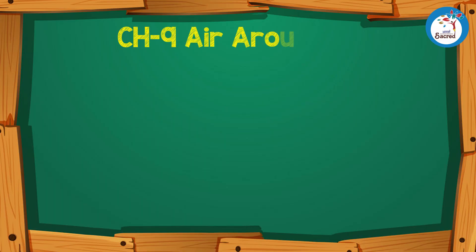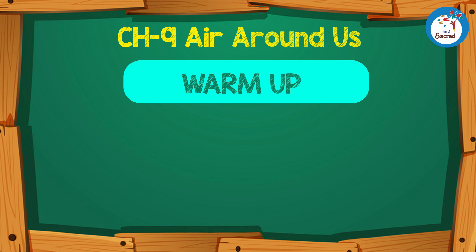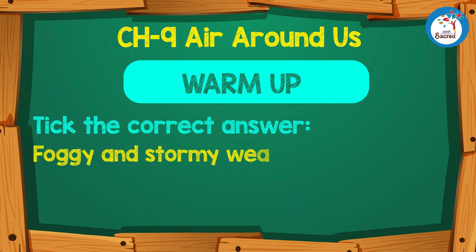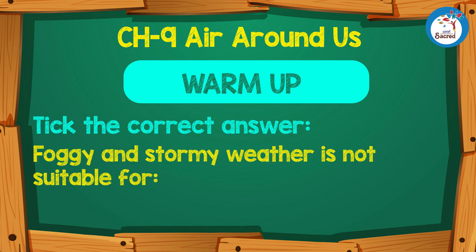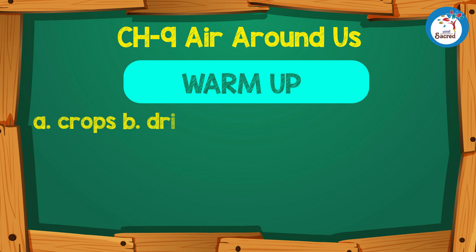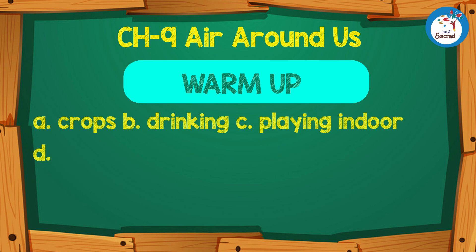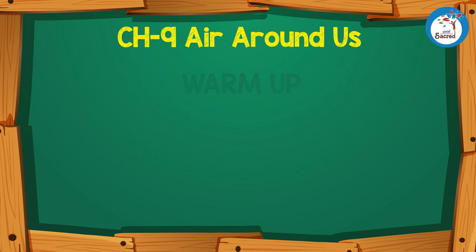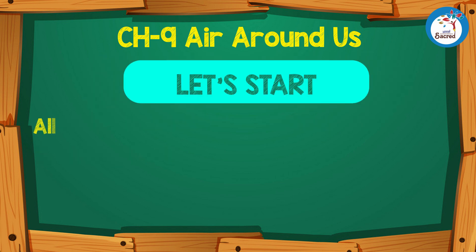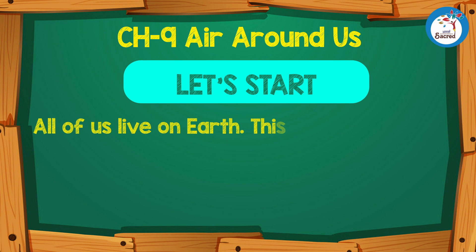Chapter 9: Air Around Us. Warm up - Take the correct answer. Foggy and stormy weather is not suitable for: A. Crops, B. Drinking, C. Playing indoor, D. Eating food.